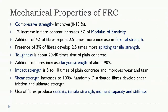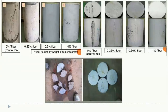Use of fibers produces improvements in ductility, tensile strength, moment capacity, and stiffness. All mechanical properties — ductility, tensile strength, moment capacity, compressive strength, toughness, and stiffness — will be improved by adding fibers to the concrete matrix, as confirmed through testing.